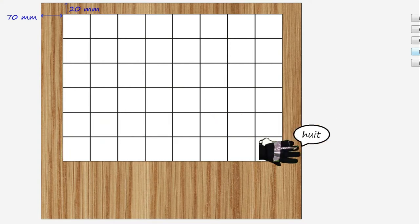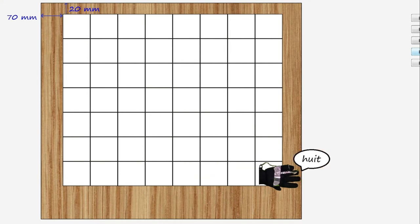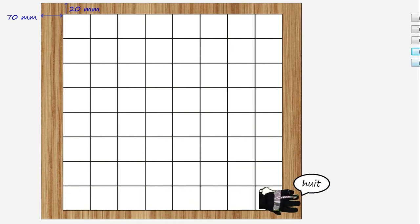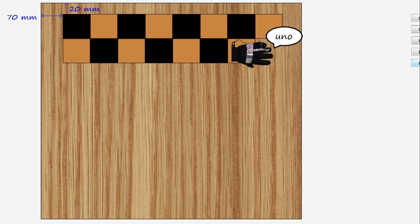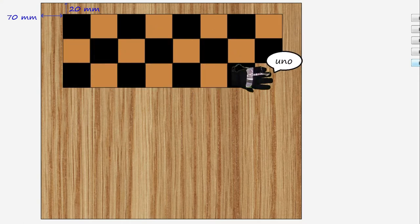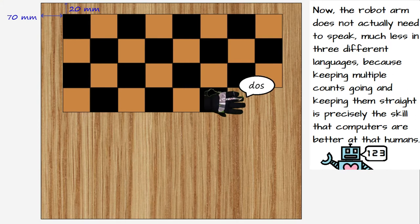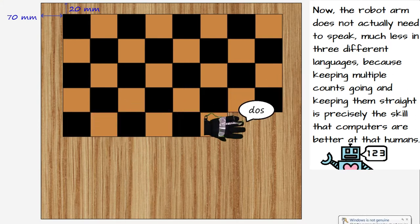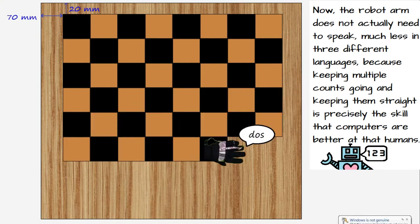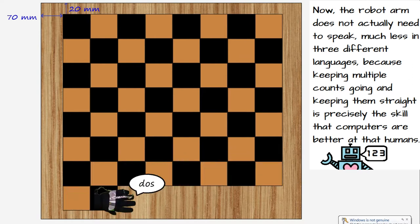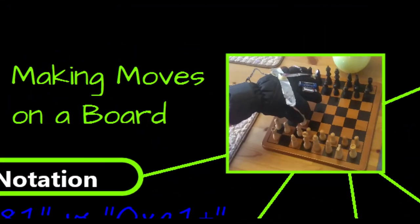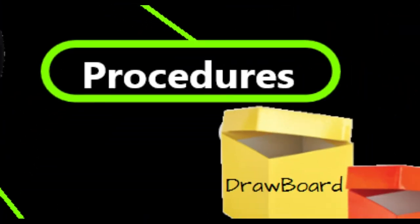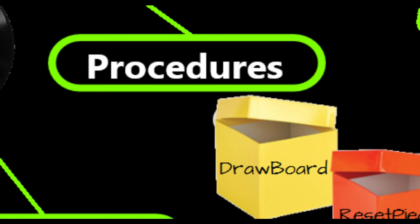But to make it look like a chess board, you'll also want the robot to color in every second square, so you need one more instruction, something like, also be counting up in Spanish. Add one to your Spanish count every time you draw a square. If the Spanish number you say is odd, color in the square. Now the robot arm does not actually need to speak, much less speak three different languages, because keeping multiple counts going and keeping them straight is precisely the skill that computers are better at than humans. But change the millimeters to pixels, and what I've described is exactly how the draw board function works. Let's read through it line by line.